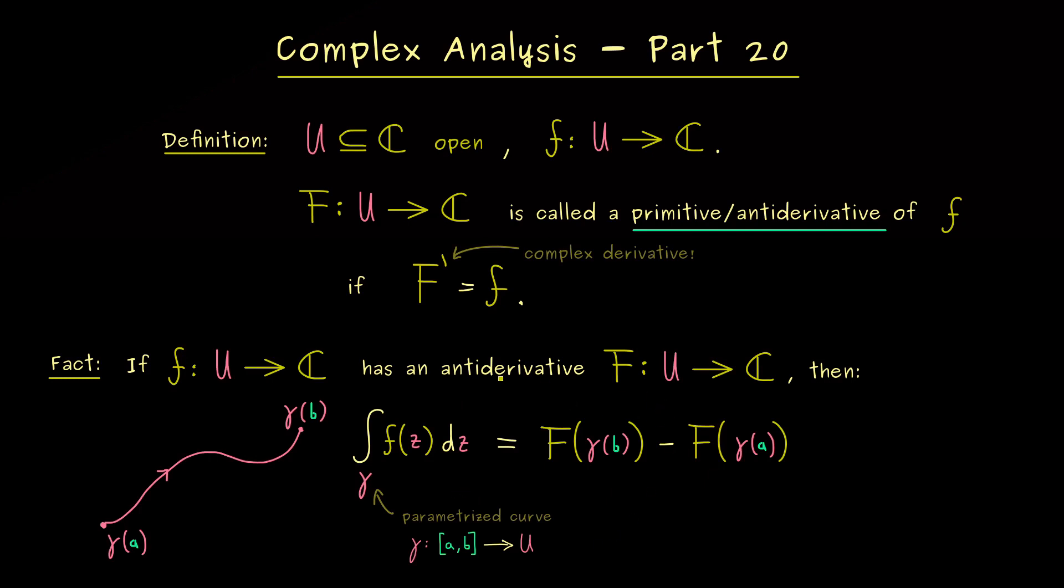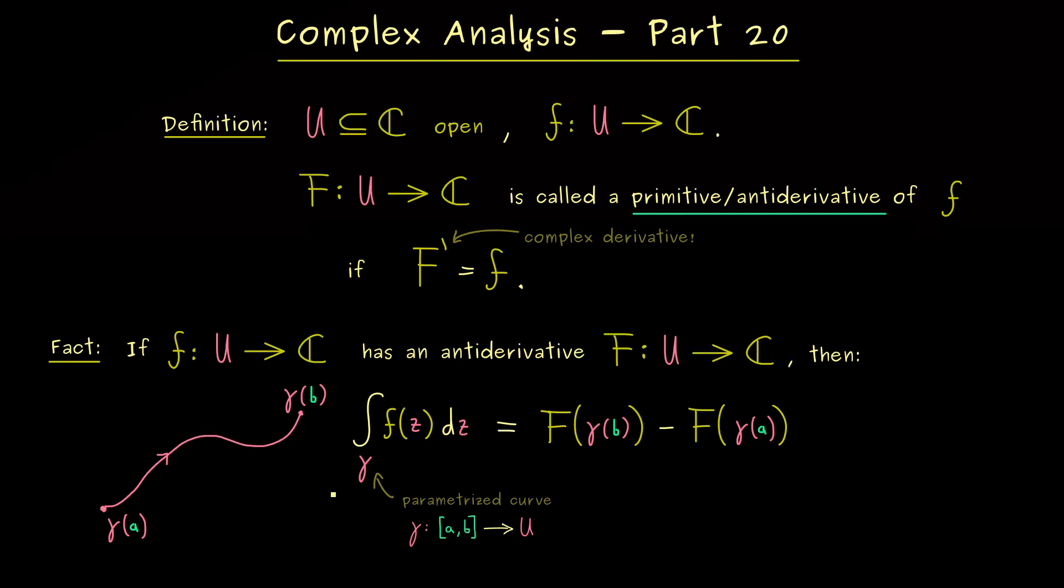And now it turns out that the difference between both points is exactly the contour integral. In other words here you see if we have an anti-derivative the way between the both points does not matter for the integral. So it just matters where we start and where we reach the end point. Of course this is a very strong result and you should remember it.